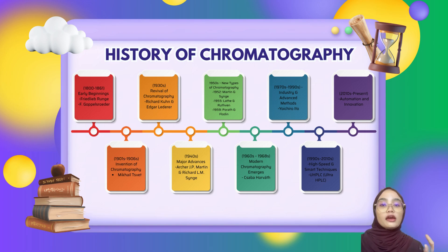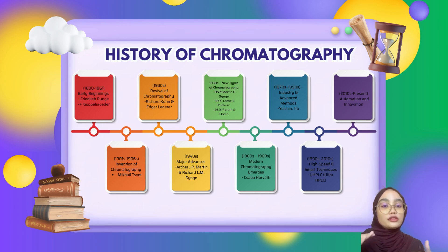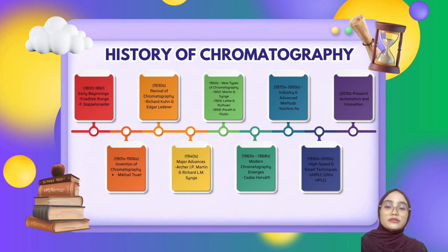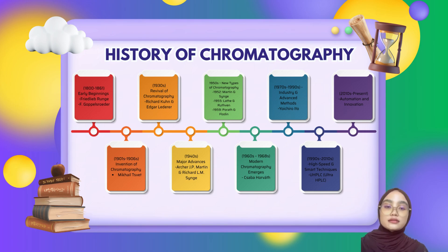In the 1940s, Archer J.P. Martin and Richard Synge improved the technique — they created partition chromatography and introduced gas chromatography. Later, Lathe and Ruthven created gel filtration, while Porath and Flodin developed size exclusion chromatography in 1959. Csaba Horváth helped start modern chromatography, working on high-performance liquid chromatography, known as HPLC.